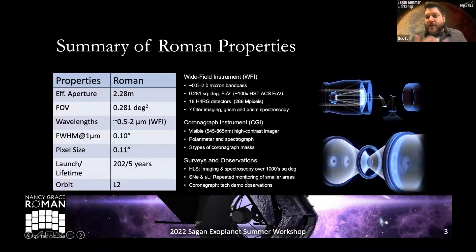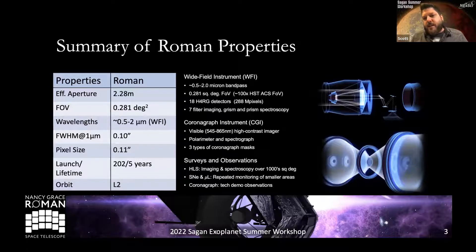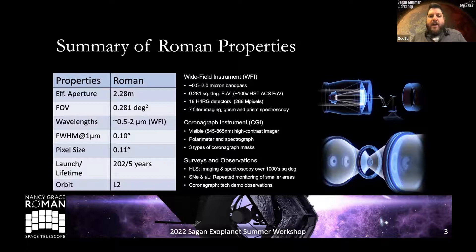There are two instruments. The wide field instrument is a wide field imager with H4RG detectors — about 300 million pixels. The instantaneous field of view is about 0.28 square degrees, roughly 100 times the ACS on Hubble.